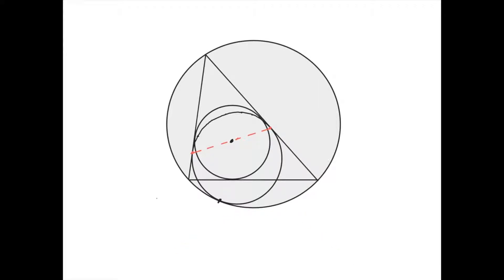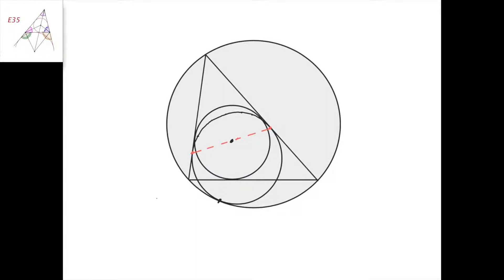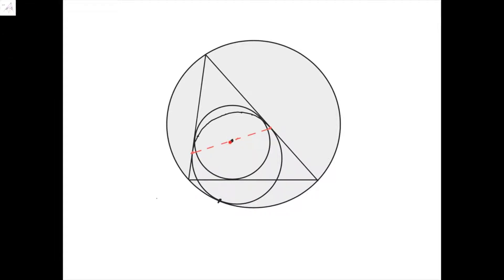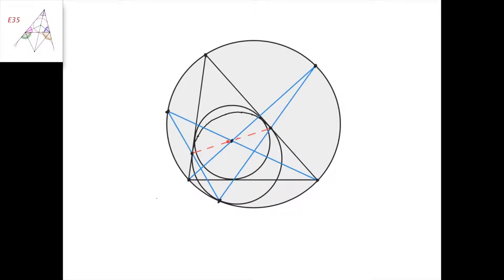The main topic for today is to prove Verrier's lemma, which states that the incenter of the triangle lies on the line defined by the two points of tangency of the mixtilinear incircle with the two sides of the triangle. Since this is the incircle, we know that this line is the angle bisector of this angle, and this line is the angle bisector of this angle.